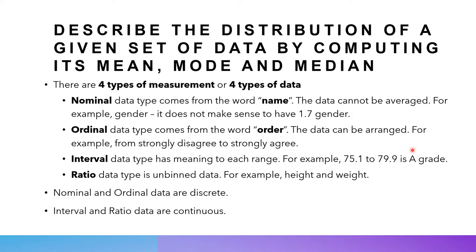Interval data has meaning to the range — 'interval' means a range. For example, your GPA or grades: every interval has a range, such as 71 to 79.9 being a B grade and so on. Ratio data is unbound data — it can be continuous or discontinuous. Height and weight are examples where every value has a different meaning. Usually nominal and ordinal data are discrete, meaning whole numbers, while interval and ratio data can be continuous.